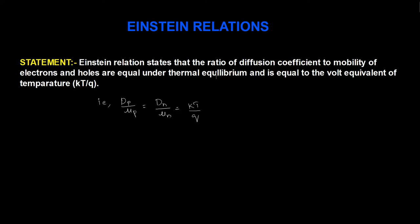Einstein relations states that the ratio of diffusion coefficient to mobility of electrons and holes is equal to the equivalent of temperature, that is kT by Q. The diffusion coefficient is denoted by Dn and Dp, and the mobility of holes is denoted by mu_p. So we will prove the Einstein relations.